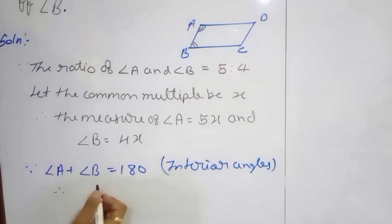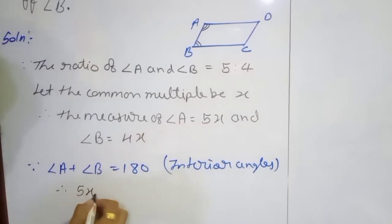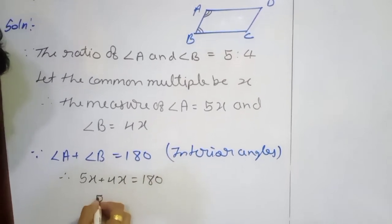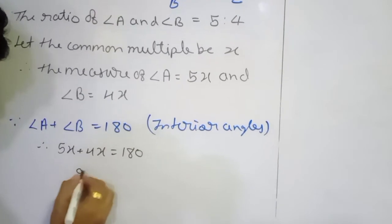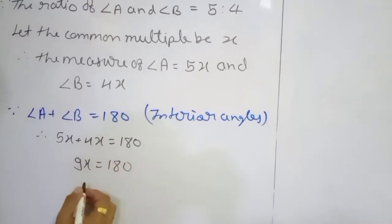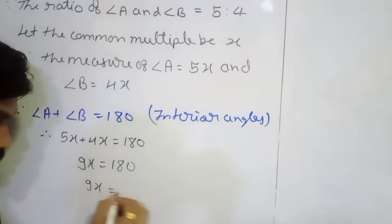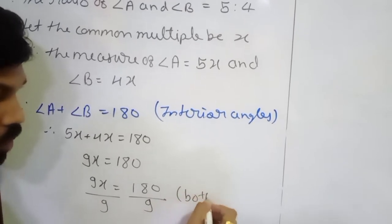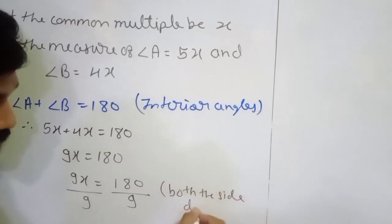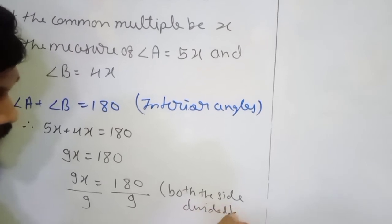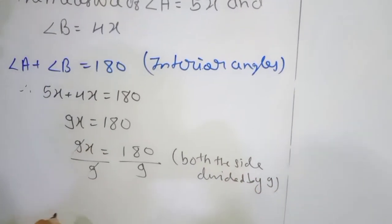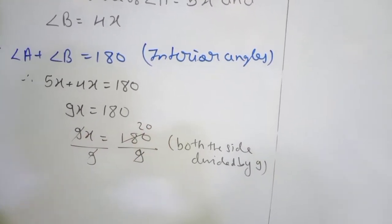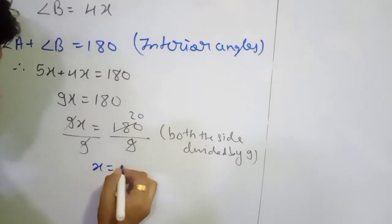Therefore, substituting the values: 5x plus 4x is equal to 180. So 9x is equal to 180. Dividing both sides by 9, x is equal to 20.